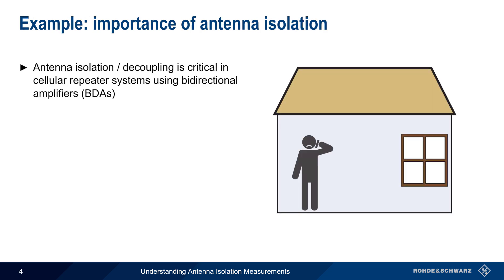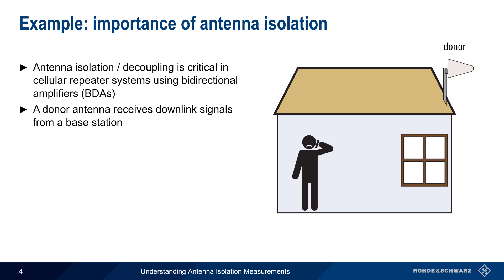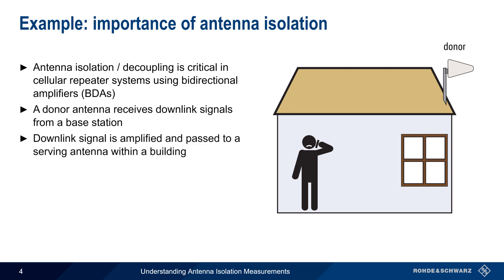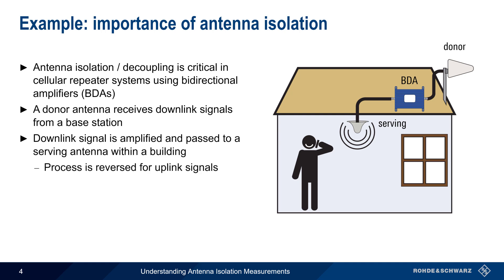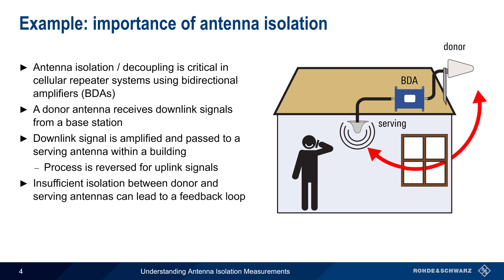One example of the importance of antenna isolation, or decoupling, is cellular repeater systems using bidirectional amplifiers. These systems use a donor antenna to receive a downlink signal from a base station. The downlink signals are then amplified and passed to a serving antenna to provide improved coverage within a building. The uplink signals from the phone are likewise amplified and transmitted back towards the base station by the donor antenna. However, insufficient isolation between the donor and serving antennas can lead to a feedback loop, causing the amplifier to oscillate and creating significant external RF interference. Proper antenna selection and placement helps avoid this issue by ensuring sufficient isolation between these two antennas.